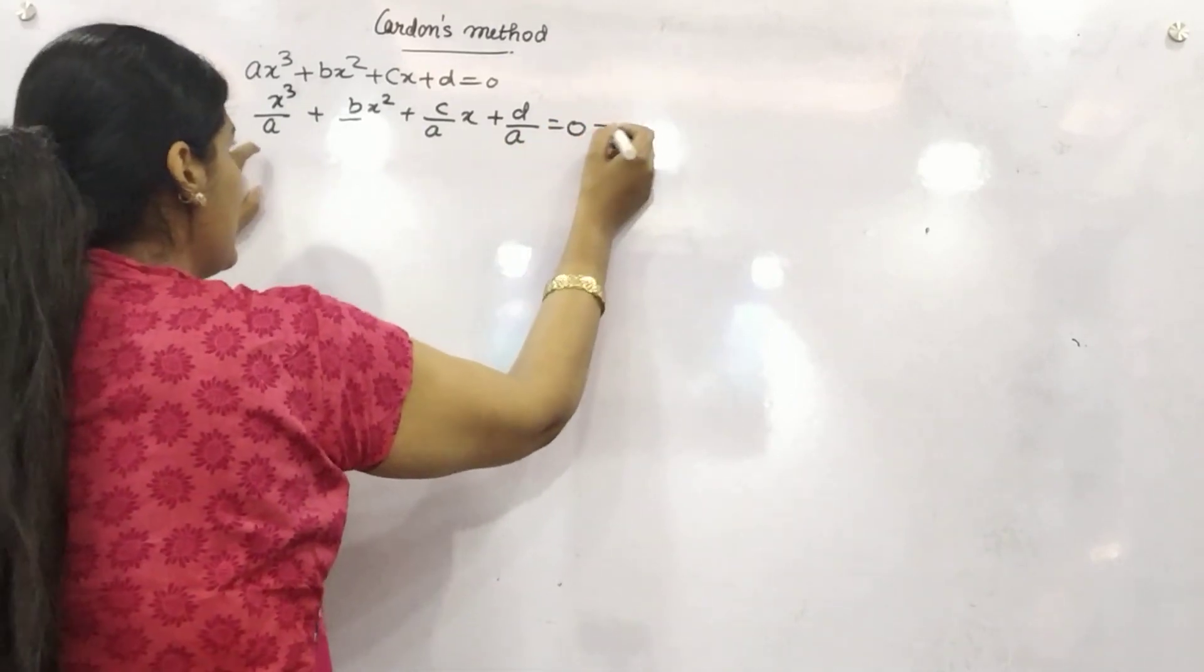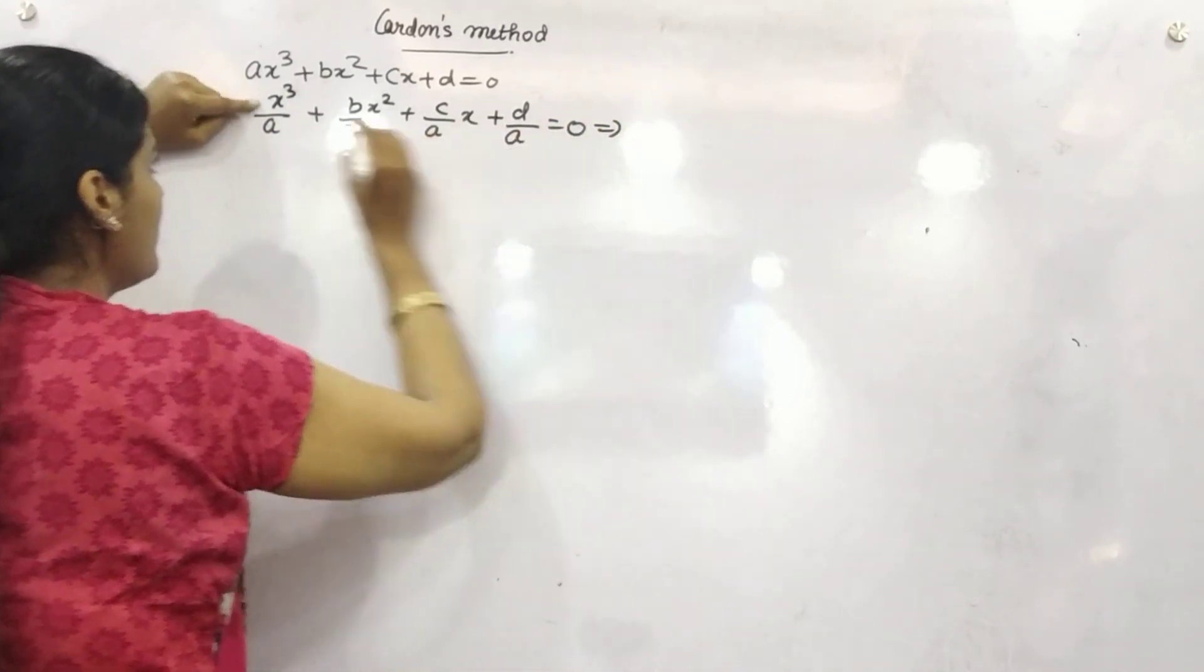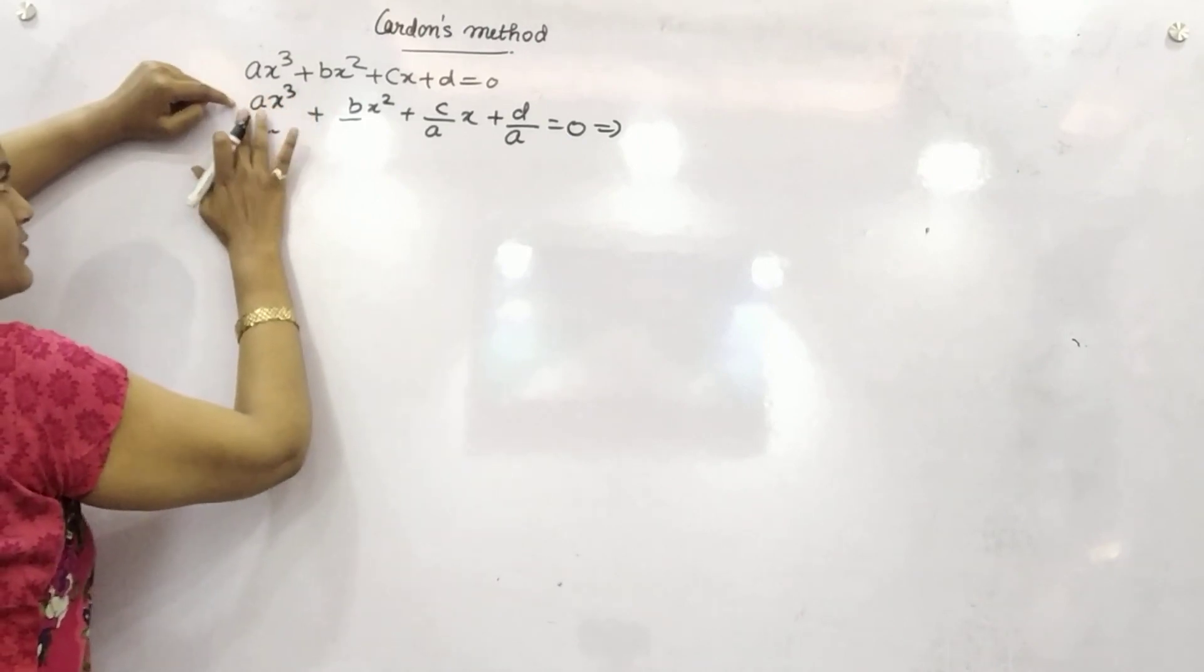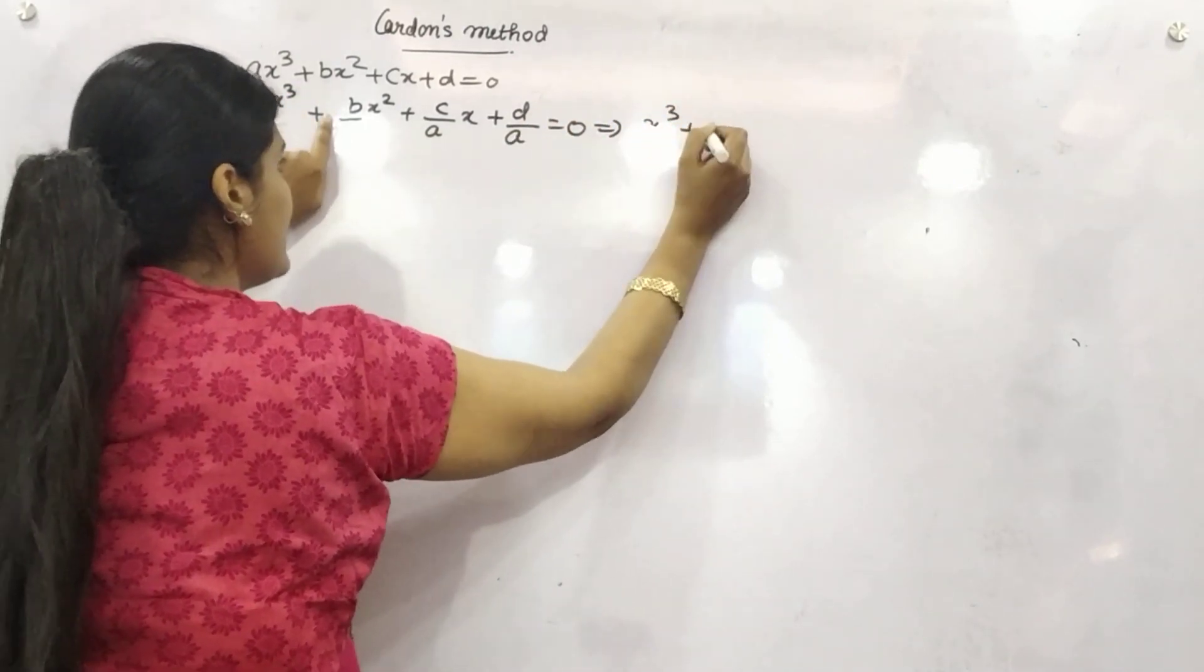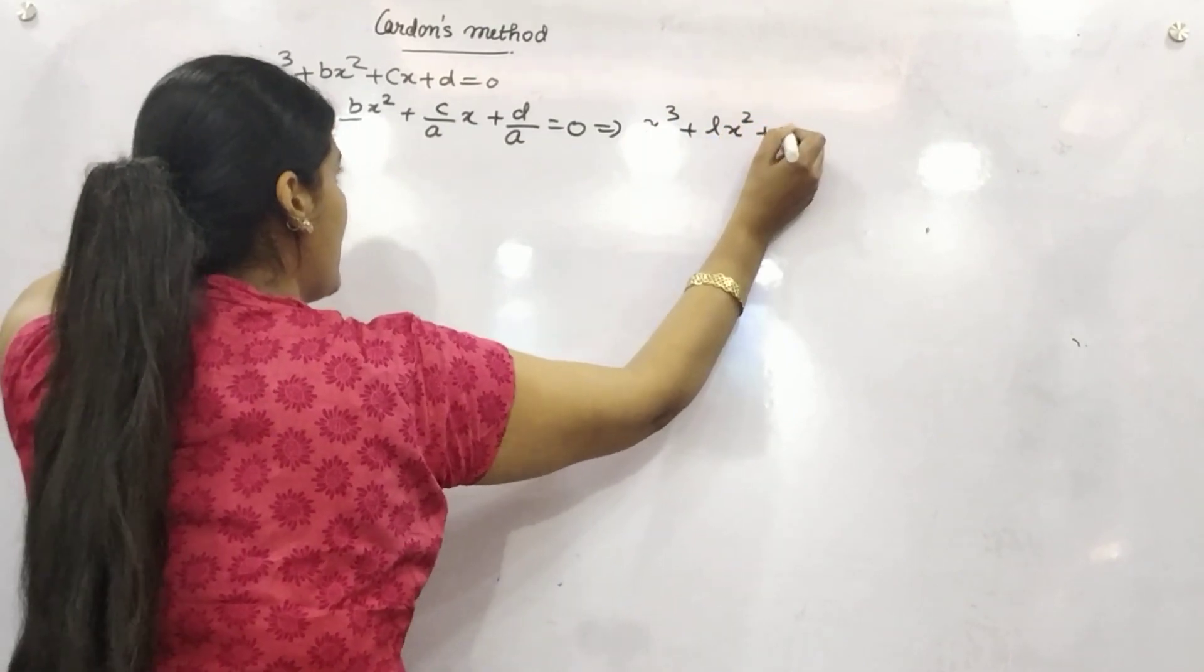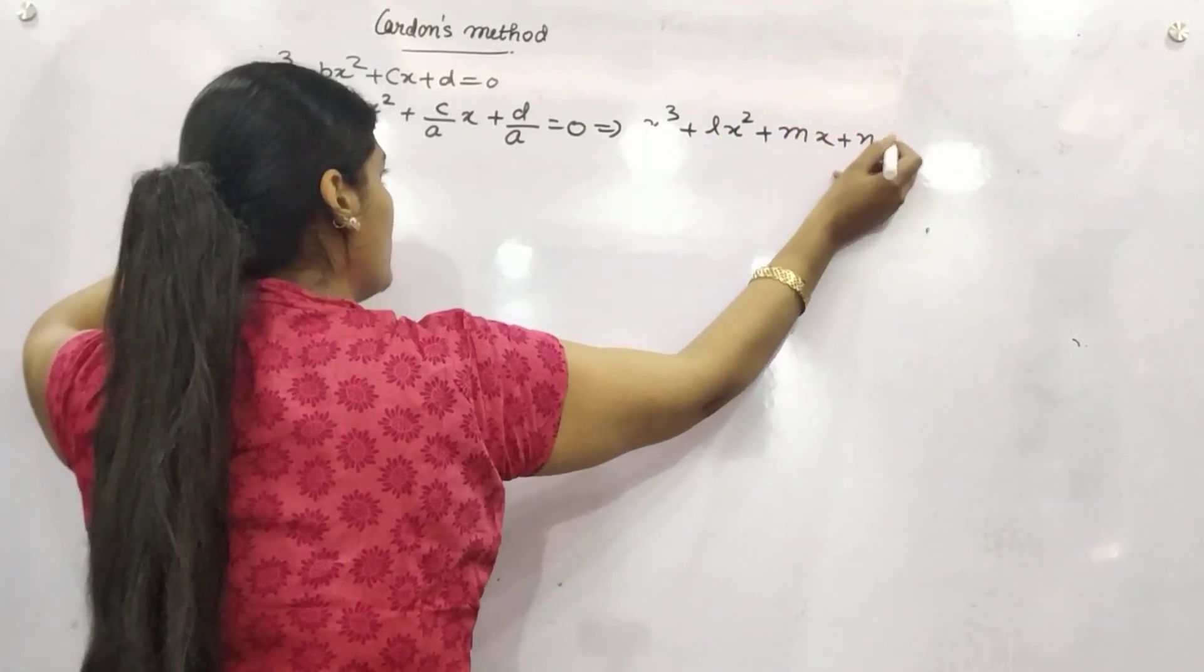Now let's say this x cubed, this is a, so it is removed. This is x cubed, let's say this is l, m, n.